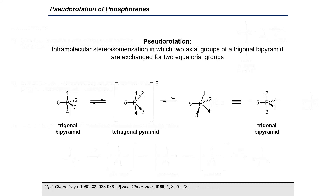Pentacoordinate phosphorus species are also capable of undergoing an isomerization process called pseudorotation. Pseudorotation is an intramolecular isomerization in which two axial groups of a trigonal bipyramid are exchanged for two equatorial groups. In the case of chiral phosphoranes, this process alters the absolute stereochemistry of these molecules.